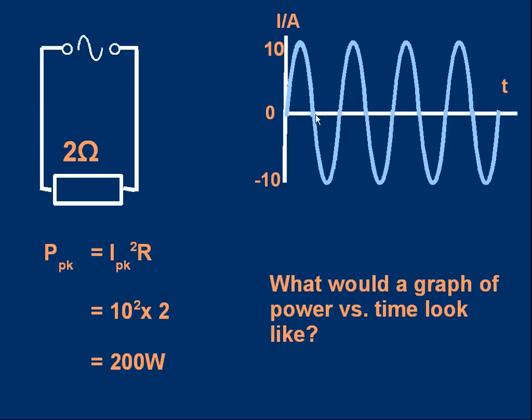When the current is minus 10 amps, the power will be (-10)² × 2, which is also 200 watts. It will be positive because the heating effect — the power production — doesn't depend on the direction of the current, whether positive or negative. When the current is at other values the power will be less.